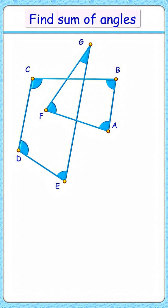Okay, this is an interesting question to solve. Here given is a 7-sided complex polygon and we have to find the sum of all angles of this complex figure.